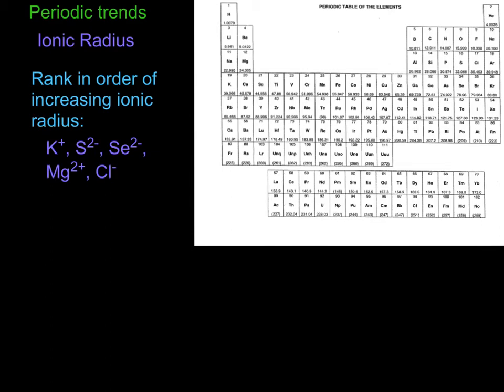Now let's do some ionic radius examples. This is a little bit of a tough one, but what we're going to do is rank these cations and anions in order of increasing radius.